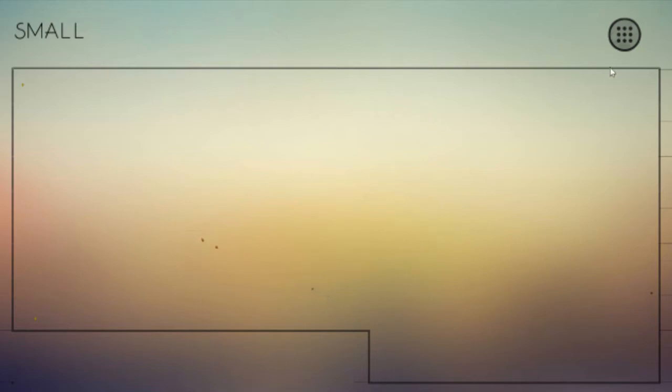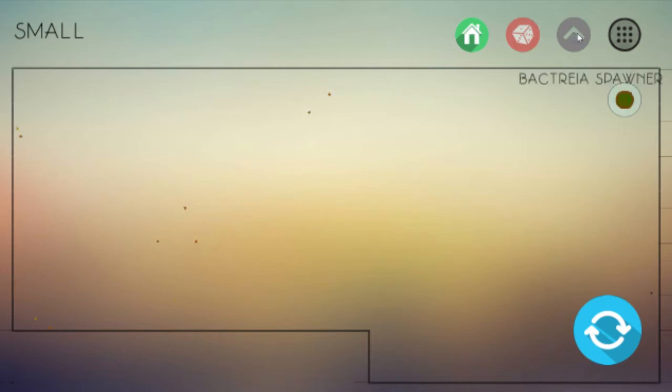On the top right here you can see a menu icon, just click it and the menu opens. With this button you can select the cell you want to place, and with this button you can turn on the randomizer and random cells will spawn. But today we're not going to turn on the randomizer yet.